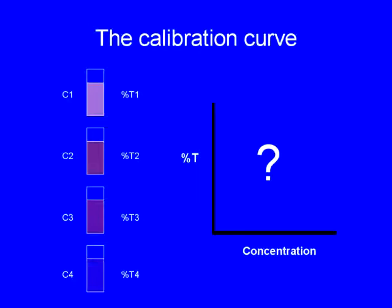Let's say we have samples of different concentrations: C1, C2, C3 and C4. If we analyze every one of them, we will have a value of transmittance for every one. How could it look like, a graph of concentration versus percentage of transmittance? You will have to find out.